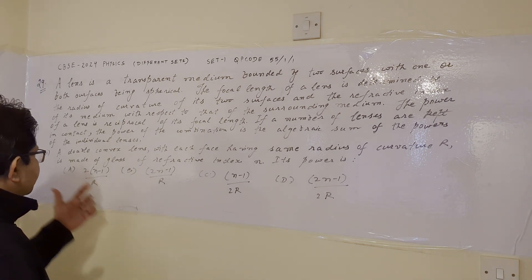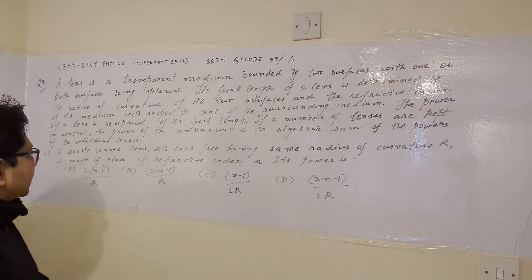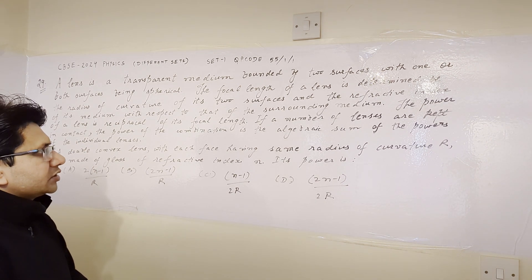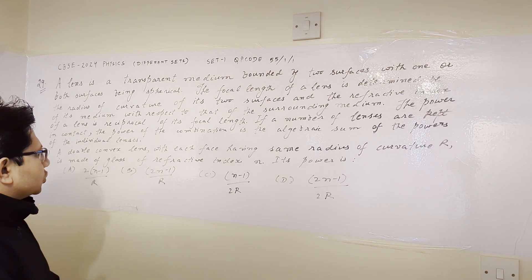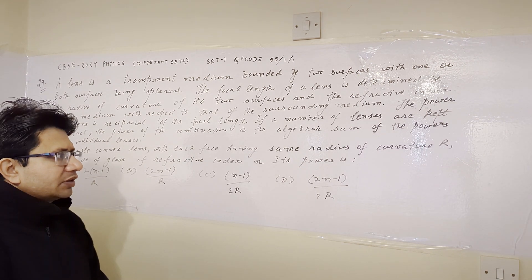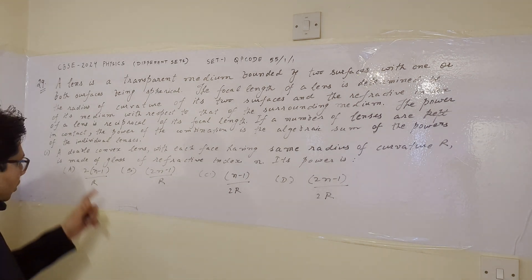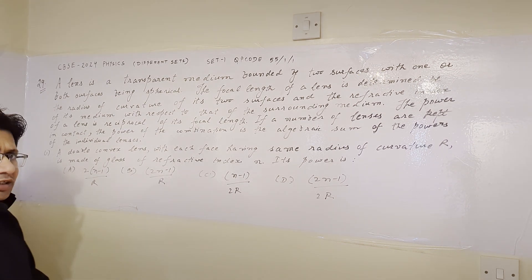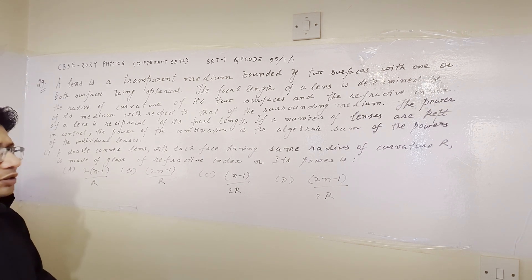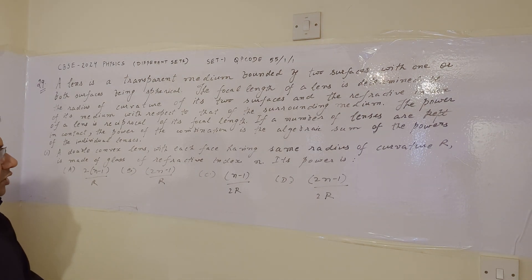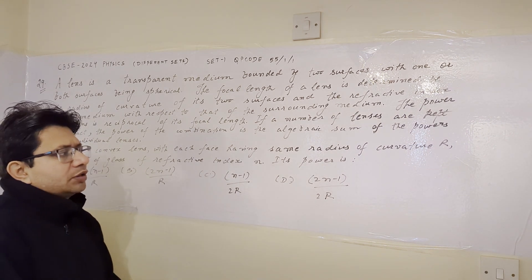The question based on this particular paragraph is: a double convex lens with each face having the same radius of curvature R is made of glass of refractive index N. Its power is — option A: 2(N-1)/R, option B: (2N-1)/R, option C: (N-1)/2R, and option D: (2N-1)/2R.